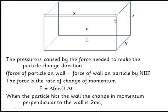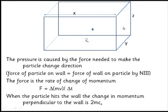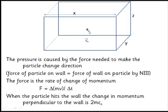Let's look at our box. We'll give it a length x, a depth y, and a height z. We're only going to look at the particle going in one direction first — just forwards and backwards along the box. The pressure it causes comes from the force needed to make it change direction. As it hits the wall there's a pressure created, and the force of the particle on the wall is the same as the force of the wall on the particle — this is Newton's third law.